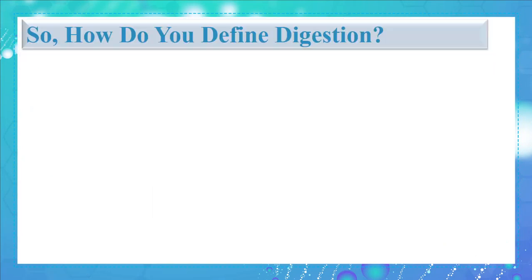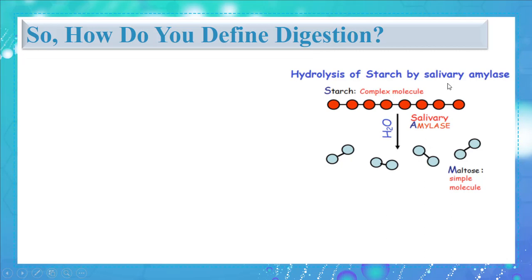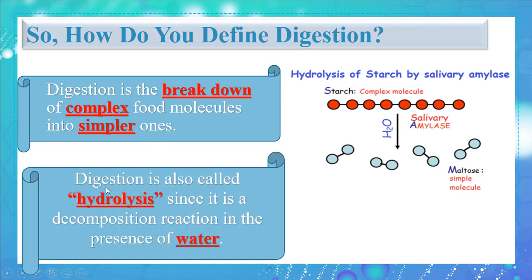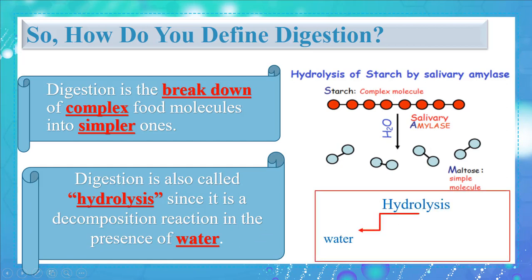How do you define digestion? Starch is a complex molecule; under the action of salivary amylase, it transforms into a simpler molecule. This is the concept of digestion — the breakdown of complex food molecules into simpler ones. Digestion is also called hydrolysis, since it is a decomposition reaction in the presence of water. 'Hydro' means water, and 'lysis' means decomposition.